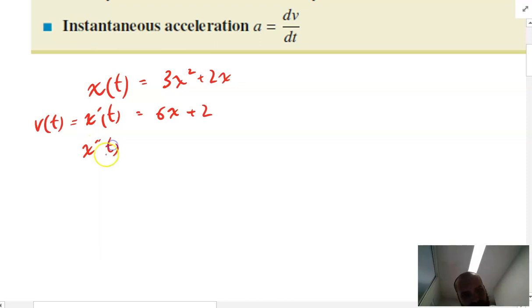And then if you find the derivative of that, x dash t, that's equal to the derivative of that, V dash t, which is equal to A(t) acceleration with respect to time, which in this case is just 6.